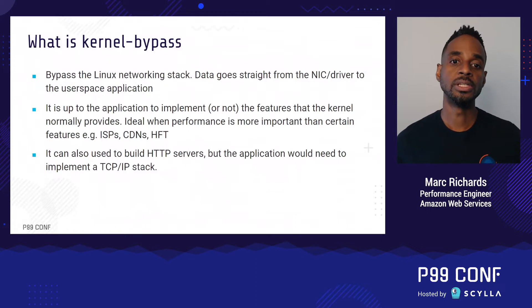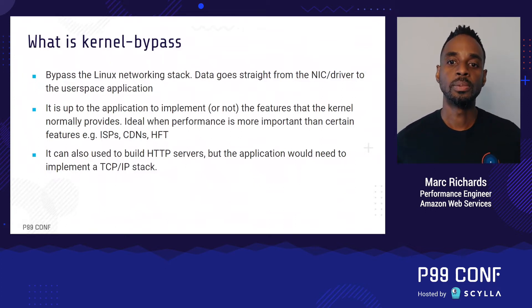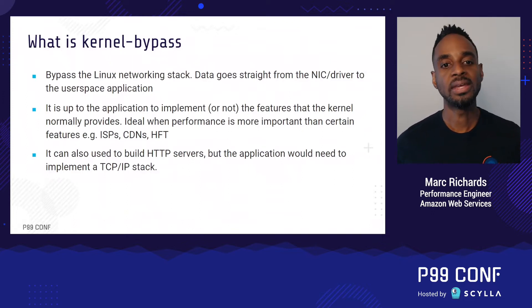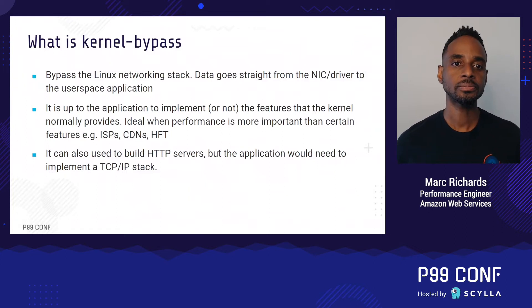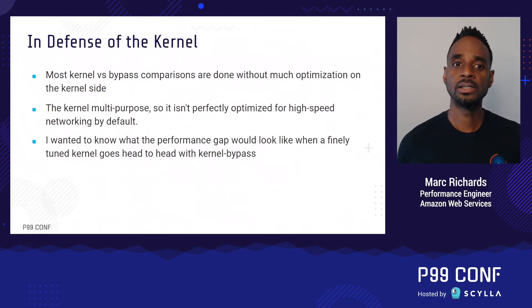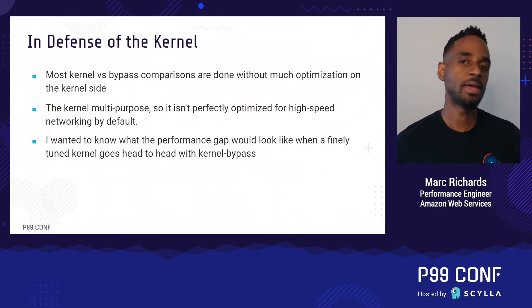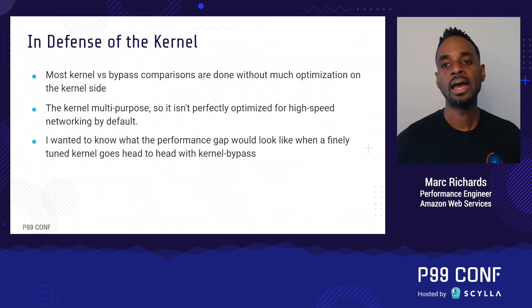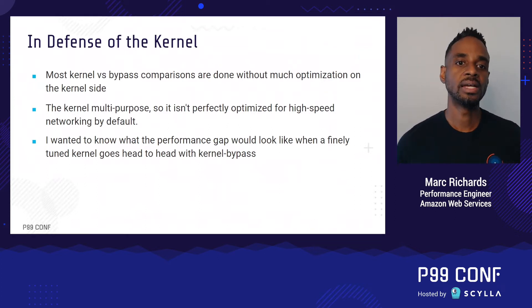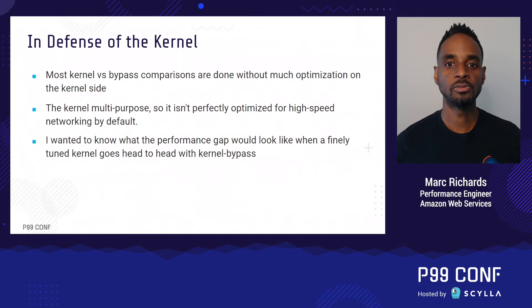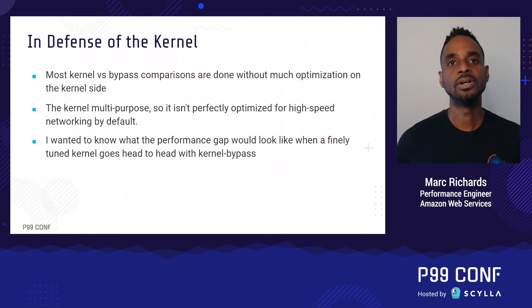Kernel bypass can also be used in more traditional applications like HTTP servers, but in that scenario it's up to the application to actually implement the entire TCP/IP stack as well. Bypassing the kernel can open up a whole new world of high throughput and low latency, and depending on who you ask, you might hear that you get as much as a 5x performance improvement. However, the truth is that most of these comparisons are done without much optimization on the kernel side.